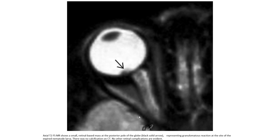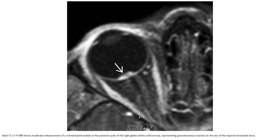The second case shows an axial T2 MRI with a small retinal-based mass at the posterior pole of the globe, representing a granulomatous reaction at the site of the dead nematode larva. There was no calcification on CT and no other retinal complications. The axial T1 with contrast and fat suppression shows moderate enhancement of the retinal-based nodule at the posterior pole of the right globe, representing a granulomatous reaction at the site of the nematode larva.